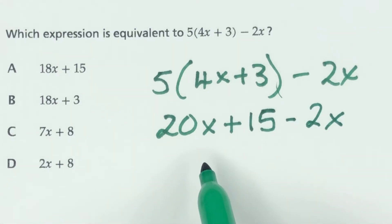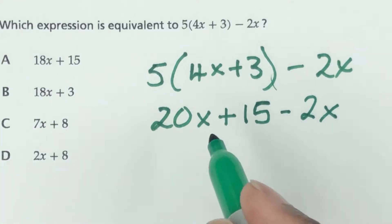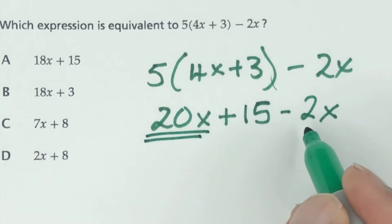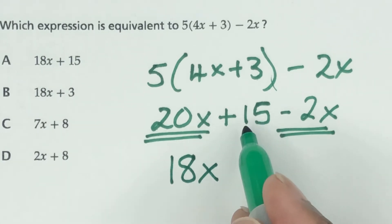Now we have to get the numbers into their families. You have 20x here and then you have minus 2x here, so these two go together. This 15 has no variable attached to it so it will have to go as a separate thing. So 20 minus 2, that's going to give us 18x and then add the 15.